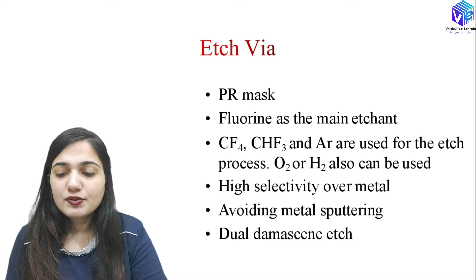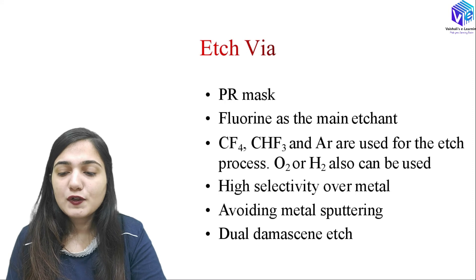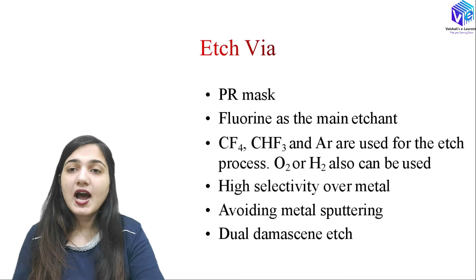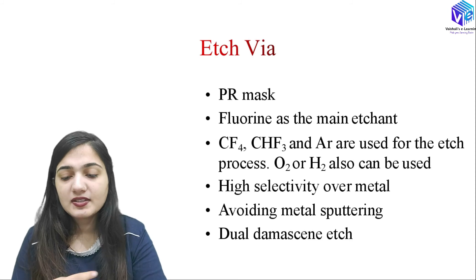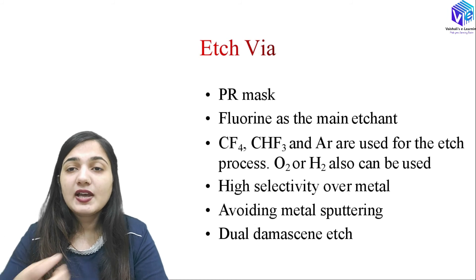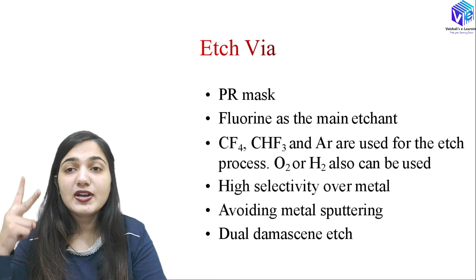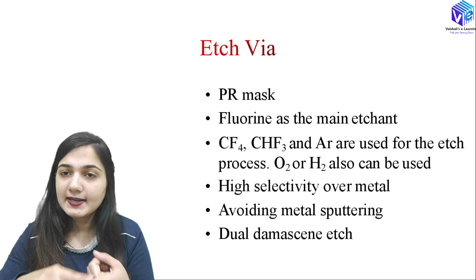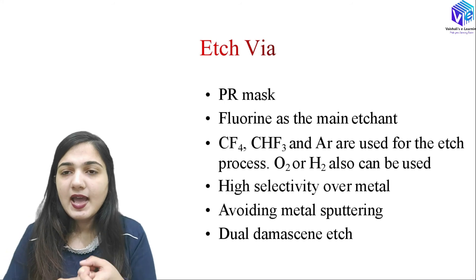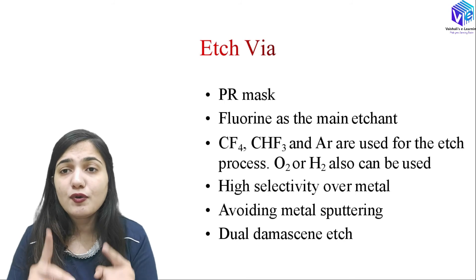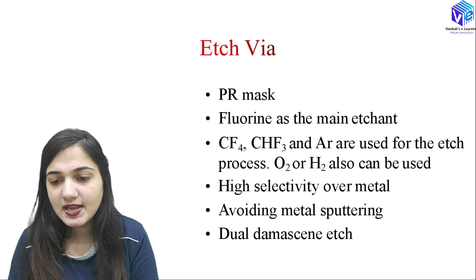We must avoid metal sputtering: if high ion energy is used, the metal can sputter out. When this happens simultaneously with the via etching, we have dual etching — etching from both metal sputtering and the fluorine etching the surface material. This is called the dual damascene etch.